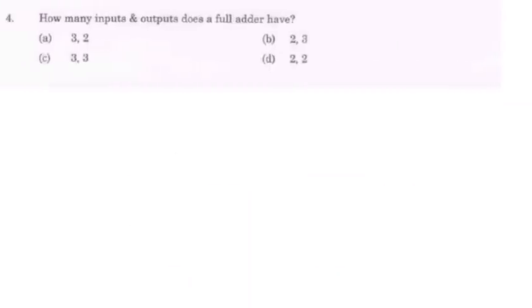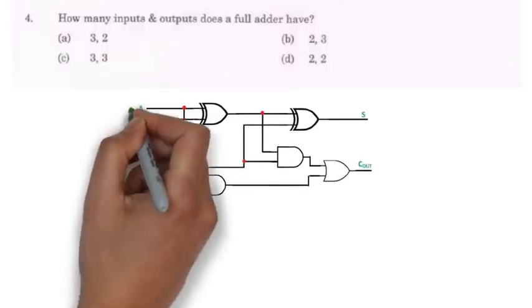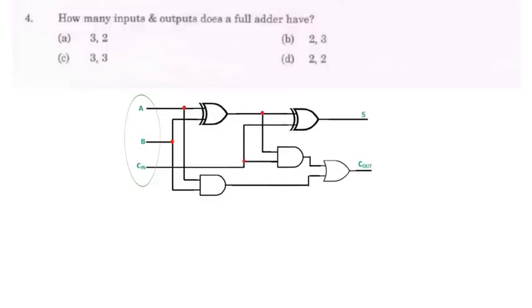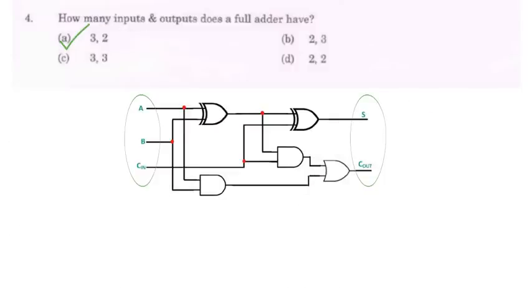In next question they have asked how many inputs and outputs does a full adder have. Since full adder is a circuit that adds two numbers along with carry so it has three inputs and the sum and the carry are the two outputs so option A is the right answer.